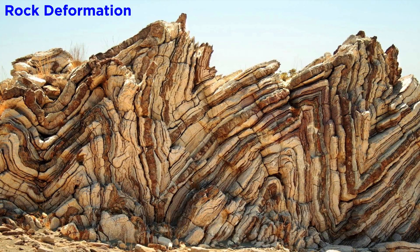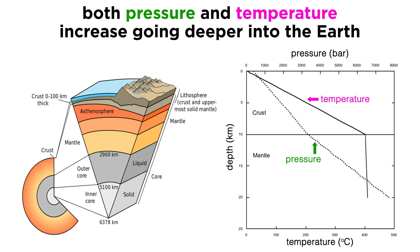Understanding how rocks deform requires a basic understanding of the mechanical properties of geologic materials, and how these mechanical properties can change under different pressure-temperature conditions. Since both pressure and temperature always increase with depth, rocks in the shallow crust are deformed differently than deeper ones, thereby forming different structures than rocks in the deep crust.